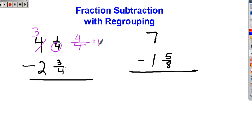So I'm moving that 1 whole over to this column with the 1 fourth that's already there. That means that this number is going to be 5 fourths.